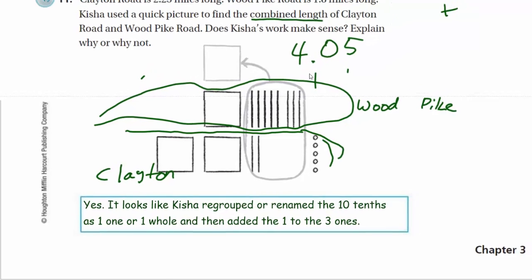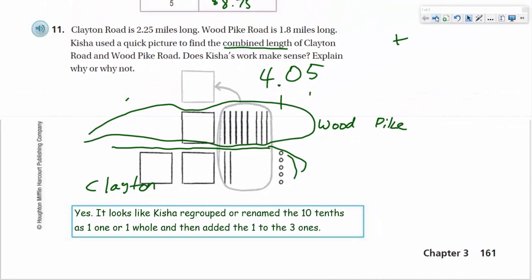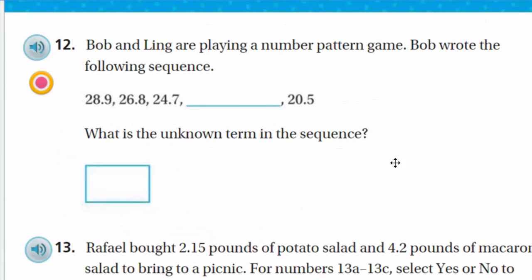Let's go on to the next page. It says Bob and Ling are playing a number pattern game. Okie dokie, and Bob wrote the following sequence. Sequence, just an order of items. Sequence. What is the unknown term in the sequence?